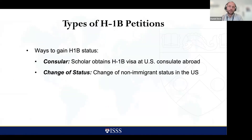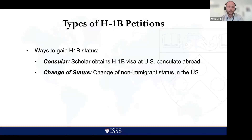To gain H-1B status, the beneficiary can go through consular processing or change of status. Consular is when the beneficiary is already outside the U.S. or will travel outside the U.S. to obtain the visa stamp at a U.S. consulate and then enter in H-1B status. Change of status is where the beneficiary is currently in the United States on a separate status such as F or J, and the status changes while the person remains in the U.S.